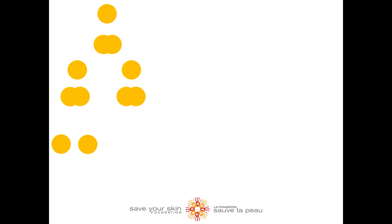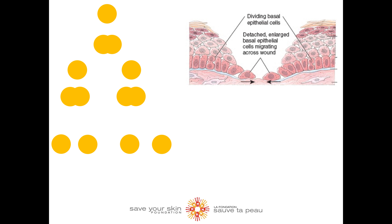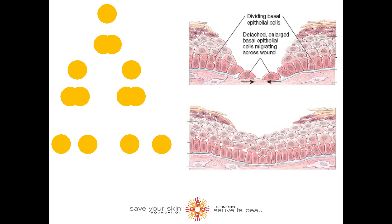The cells within our body know when they should divide and when they shouldn't. For example, in wound repair, there are specific signal molecules that are released that tell the cells within the skin that they need to divide to repair the wound. However, under normal conditions, these molecules are highly controlled so that the cells will divide at a steady pace that allows for normal skin renewal.